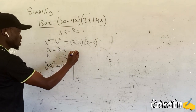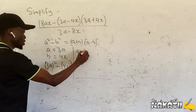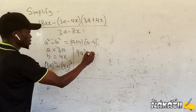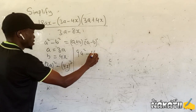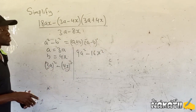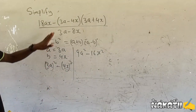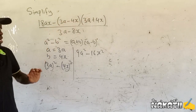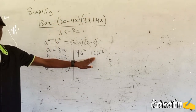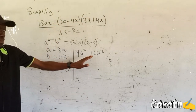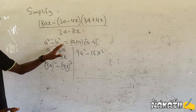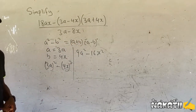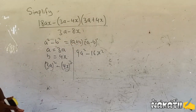This one is the same as 9a squared minus 16x squared. So therefore, this one expanded, we get this one here. And that is the simplest way, using a difference of two squares to expand in a very easy way.